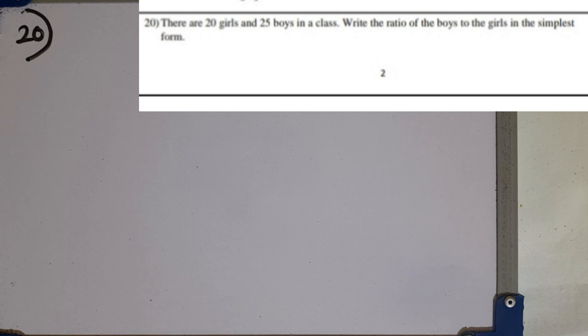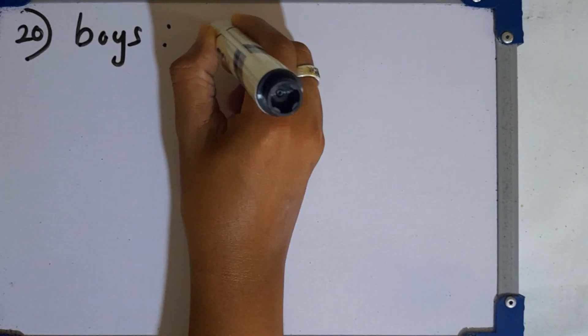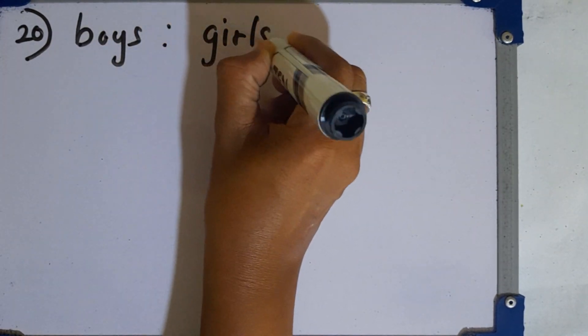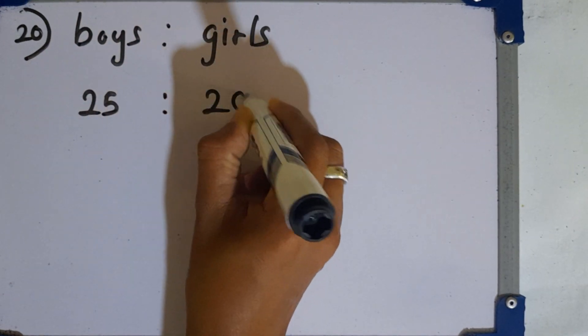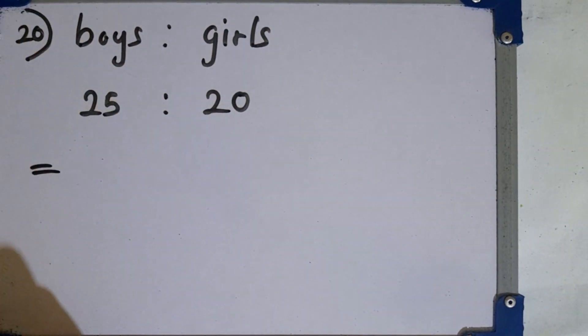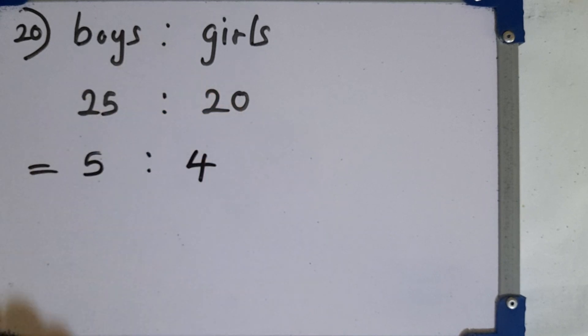Question number 20. There are 20 girls and 25 boys in a class. Write the ratio of the boys to girls in the class in the simplest form. Ratio of boys to girls. There are 25 boys. So 25 to 20. Then you can divide by 5. Both terms can be divided by 5. Then you get 5 to 4. This is the answer.